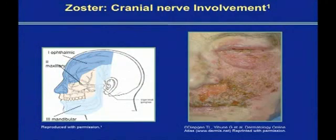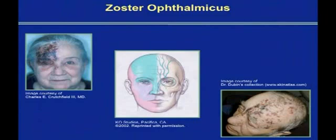You can get zoster affecting any one of the three branches of the first cranial nerve, but the one that concerns us is, of course, the ophthalmic division. The so-called Hutchinson's sign is completely unreliable. Do not think, if you see someone with extension of zoster onto the nose, that that is the only indication of likely ophthalmic zoster. If you see first cranial nerve zoster, it's got to be managed in conjunction with an ophthalmologist.